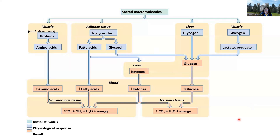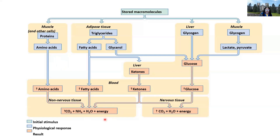Here's a schematic showing the different sources we can tap into to release nutrients in the fasted state. Muscles are really the last resort for energetic needs — we don't typically tap into muscles until we've gone an extended period in the post-absorptive state. Nevertheless, we can break that protein down into amino acids and use those amino acids in non-brain tissues to liberate energy.